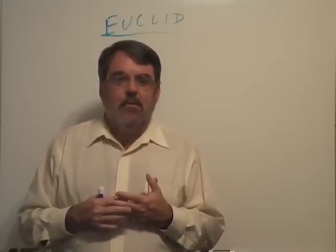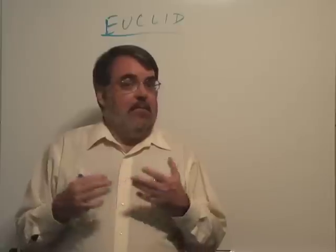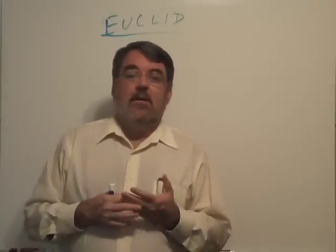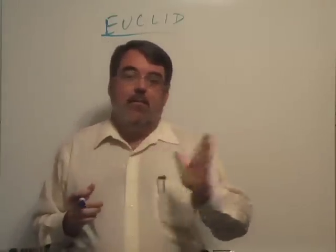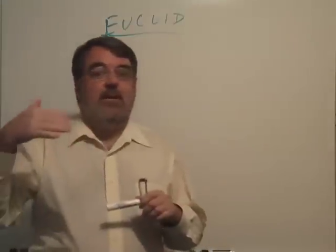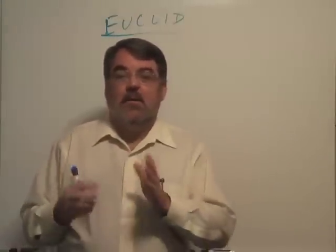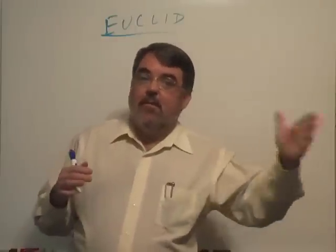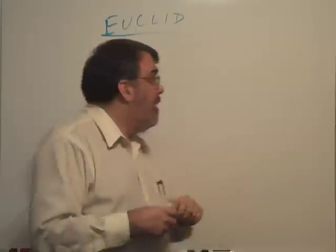Euclid maybe was not quite sure there were infinitely many primes when he set about this, because if you start calculating prime numbers, you'll find that they get sparser and sparser. There are fewer and fewer of them as you get up in the high numbers. So conceivably, they could run out.